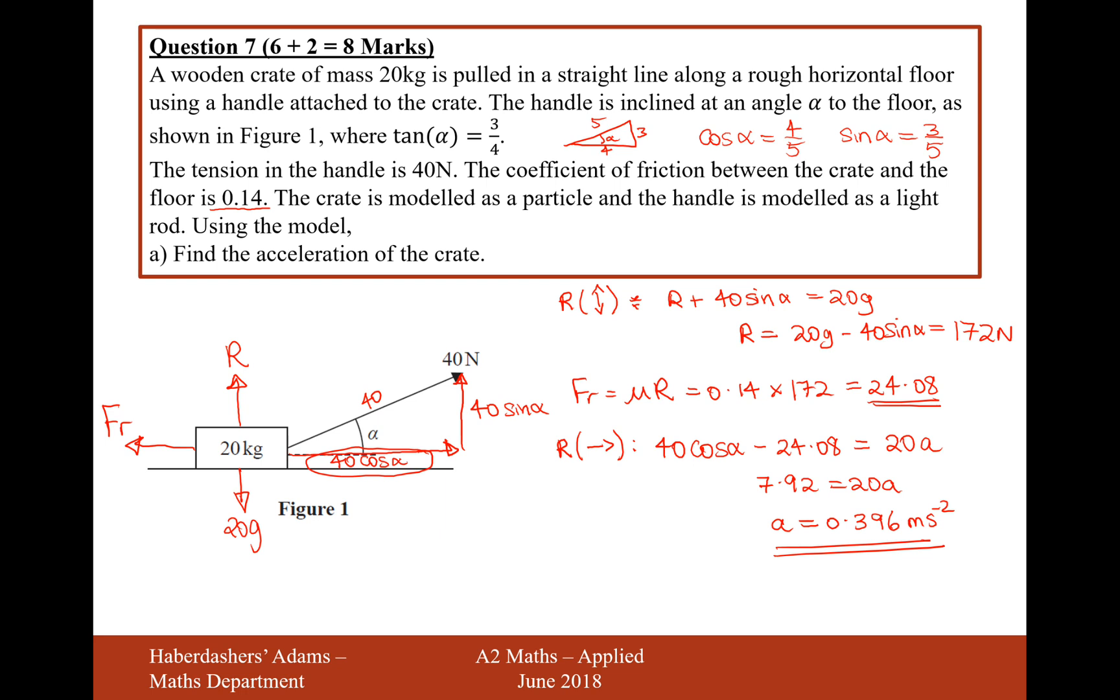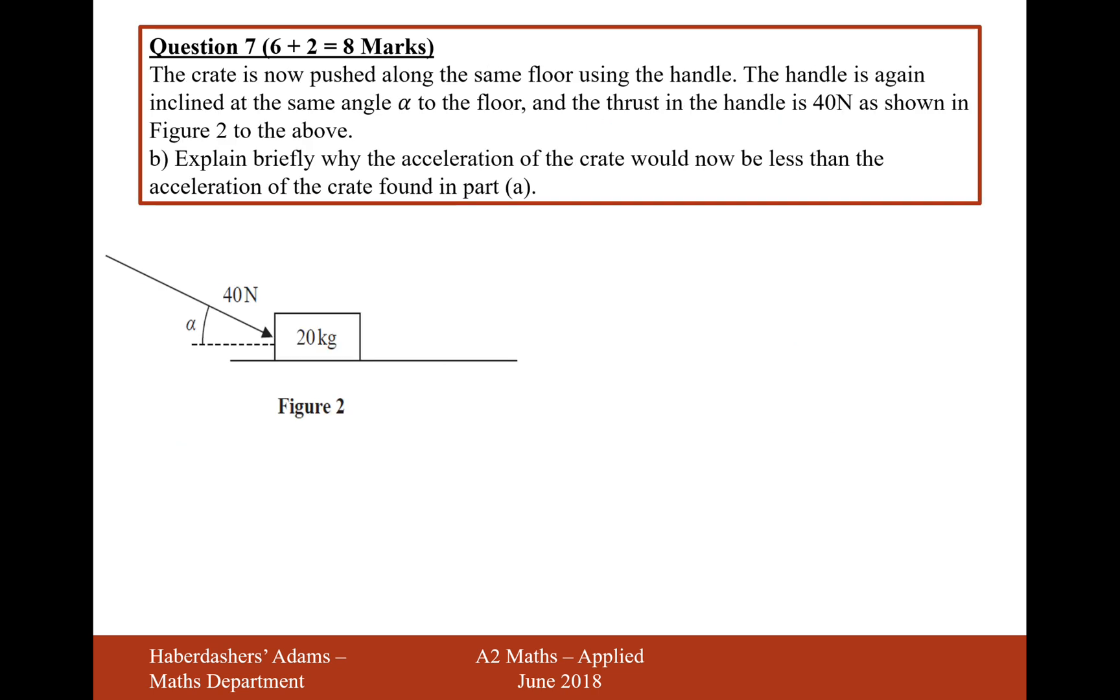Let's move on to the next part then. So the next question here has the arrow of 40 and a different angle here. It previously was going up in this direction. Now it's coming down in this direction here. The crate is now pushed along the same floor using the handle. The handle is again inclined to an angle of α on the floor. And the thrust in the handle is 40 newtons, as shown in figure 2 above or below in this case.